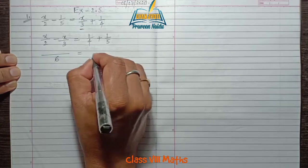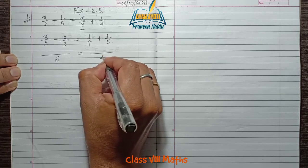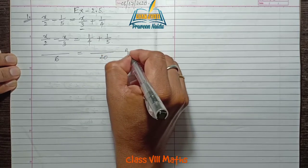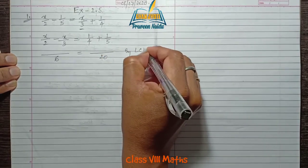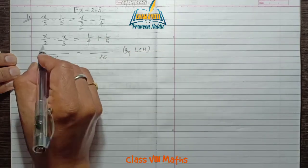Find the LCM of denominators on both sides. Left hand side is 6, and right hand side is 20.